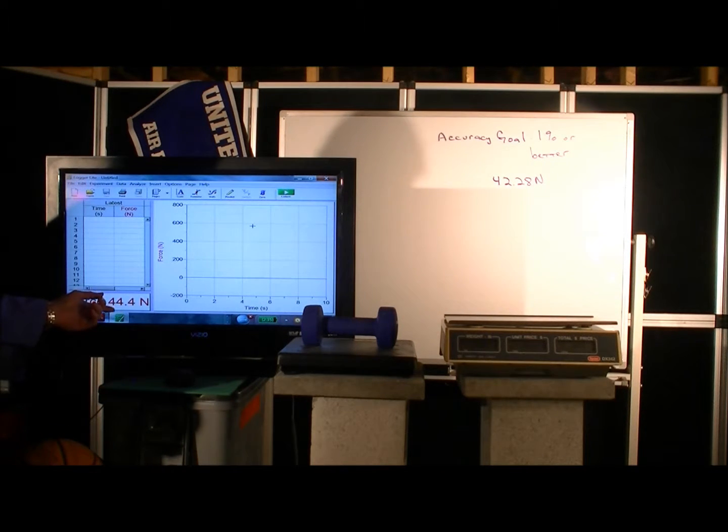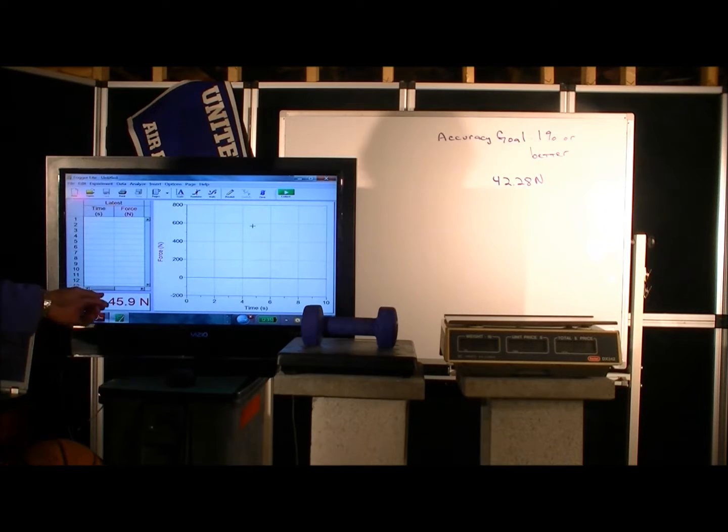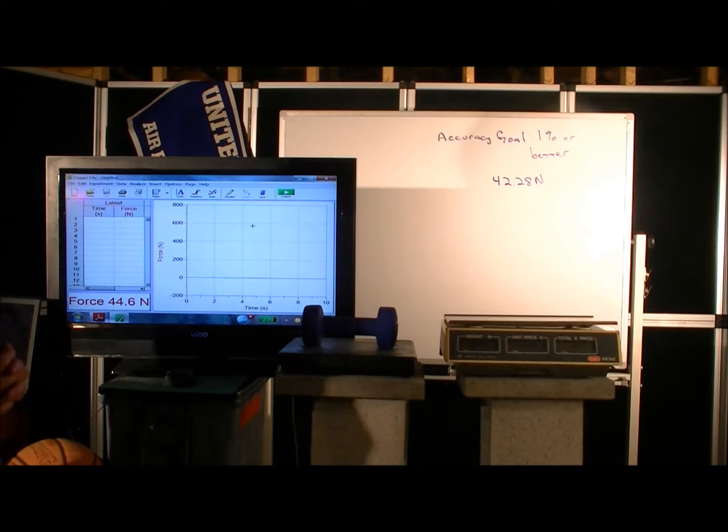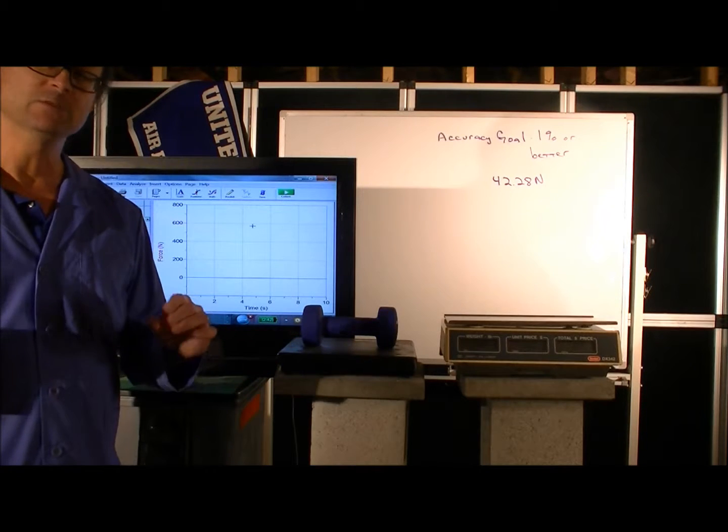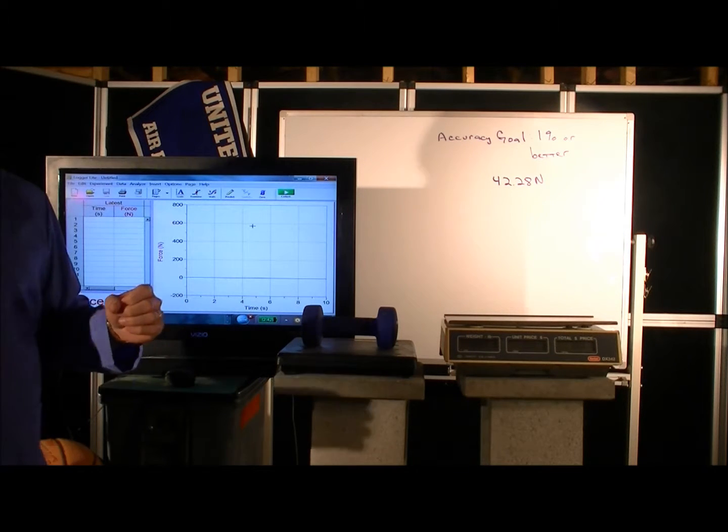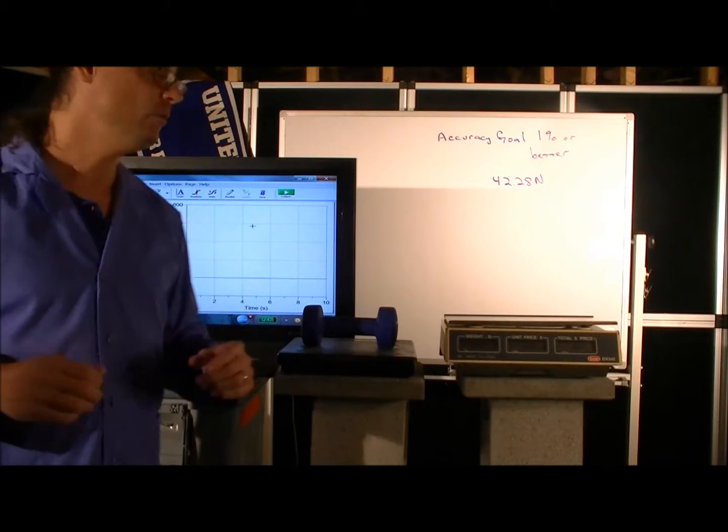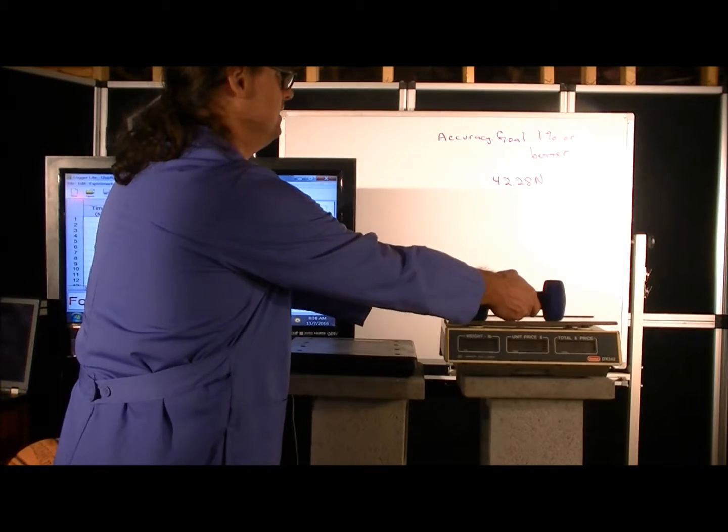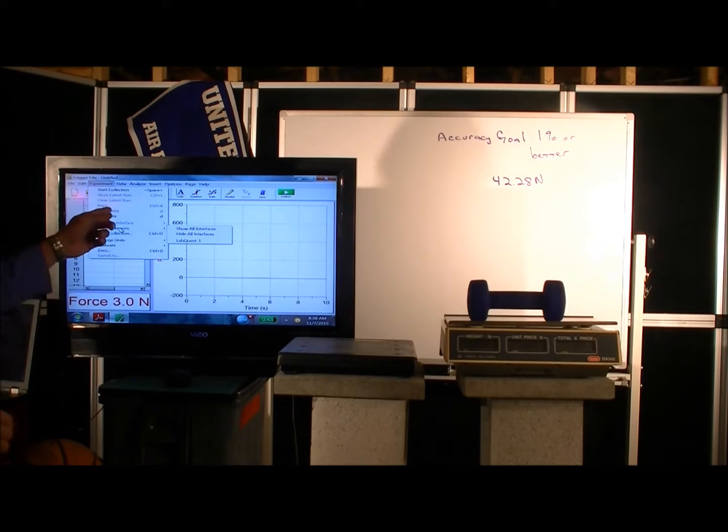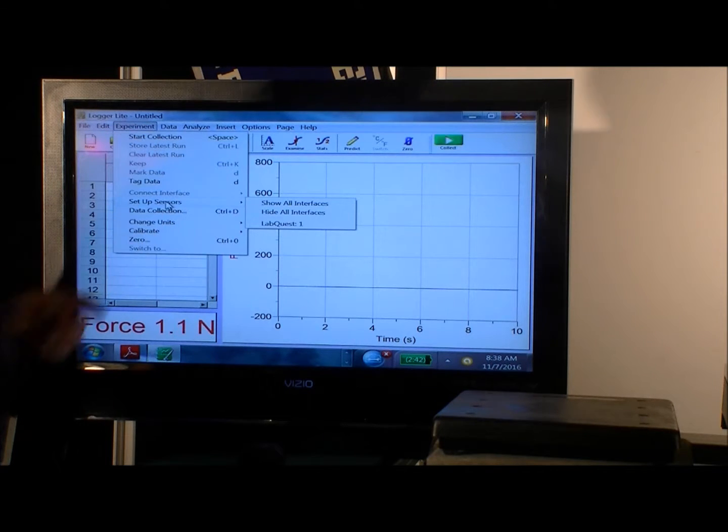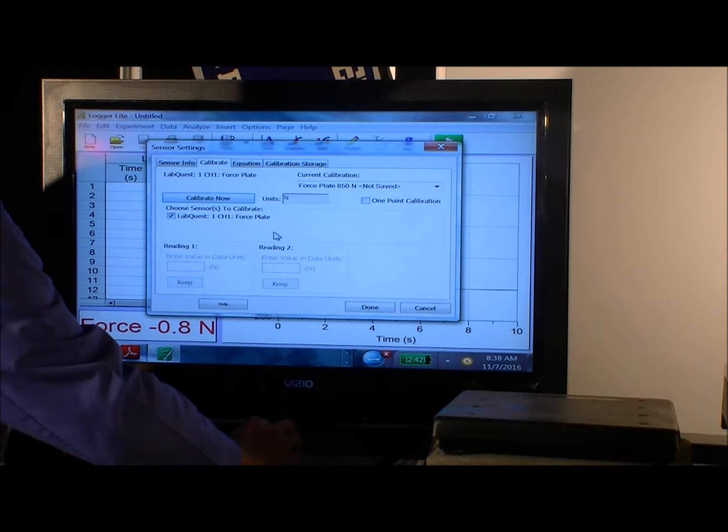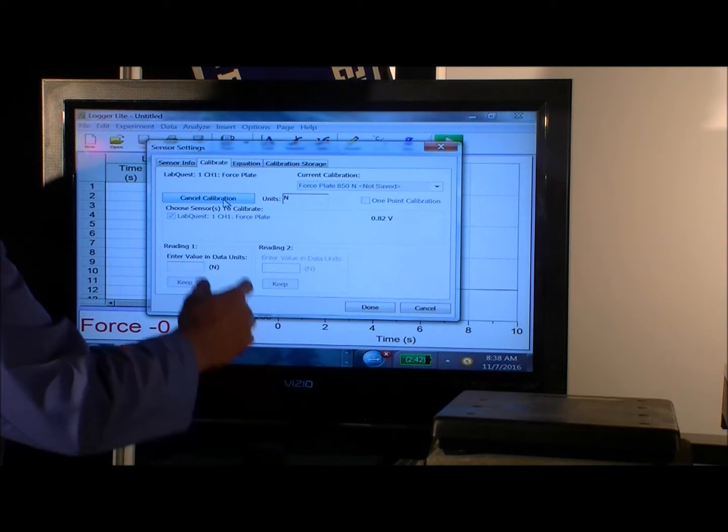And if you notice, that's a little bit different than the 42.28 Newtons that we had calculated that it should be if things were working perfectly accurately. So let's go ahead and let's talk about this subject of calibration, because calibration is often important when making accurate measurements. And there's a facility here in the software that allows us to calibrate things accurately. If we come to the experiment menu, and I'm going to zoom in so we can see more accurately what we're doing here, so we come to the experiment menu, scroll down to calibrate, select the LabQuest and the force plate we want to calibrate.